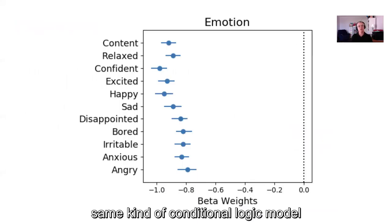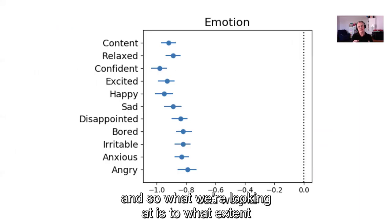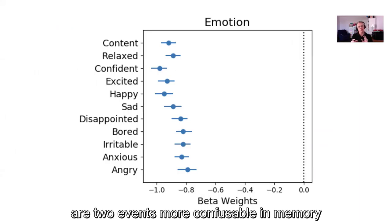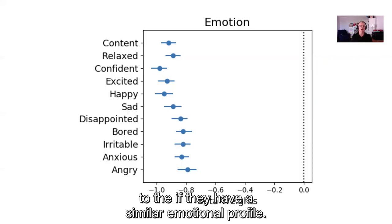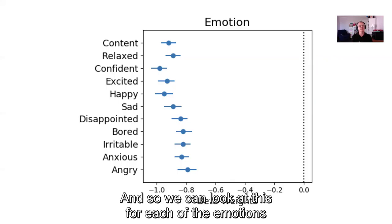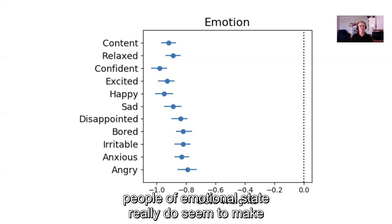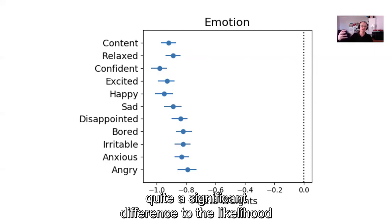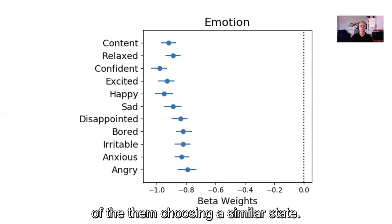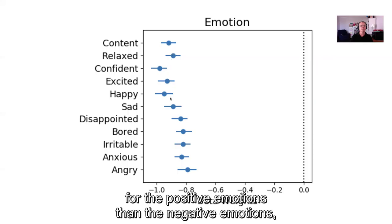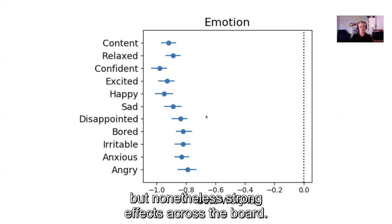Using the same conditional logit model, we looked at the extent to which two events are more confusable in memory if they have a similar emotional profile. We can examine this for each of the 11 emotions, and in all cases the results are highly significant. People's emotional states really do seem to make a significant difference to the likelihood of choosing a similar state. There's a slightly stronger effect for positive emotions than negative emotions, but strong effects across the board.